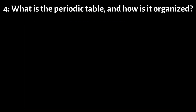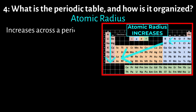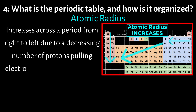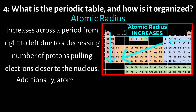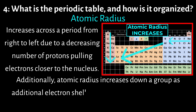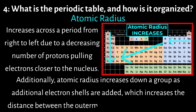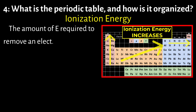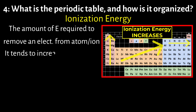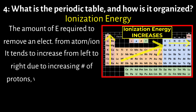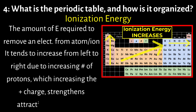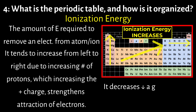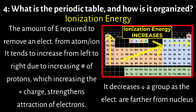Atomic radius generally increases across a period from right to left due to a decreasing number of protons pulling electrons closer to the nucleus. Additionally, atomic radius increases down a group as additional electron shells are added, which increases the distance between the outermost electrons and the nucleus. Ionization energy is the amount of energy required to remove an electron from an atom or ion. It tends to increase across a period from left to right due to the increasing number of protons, which strengthens the positive charge, increasing the attraction of the electrons. It decreases down a group as the outer electrons are further from the nucleus, shielded by more inner electron shells.